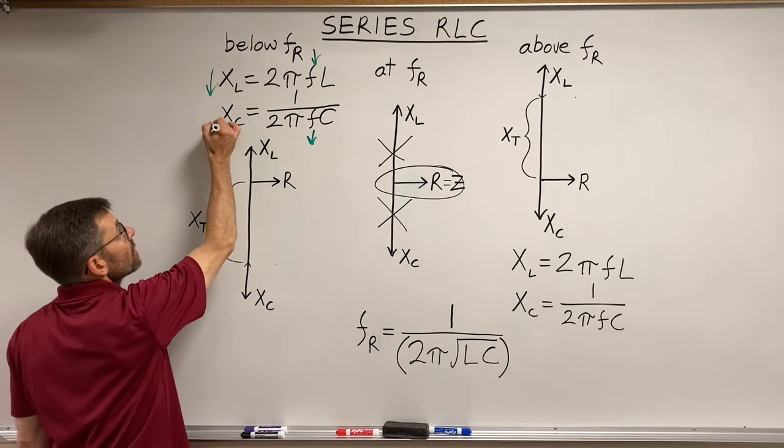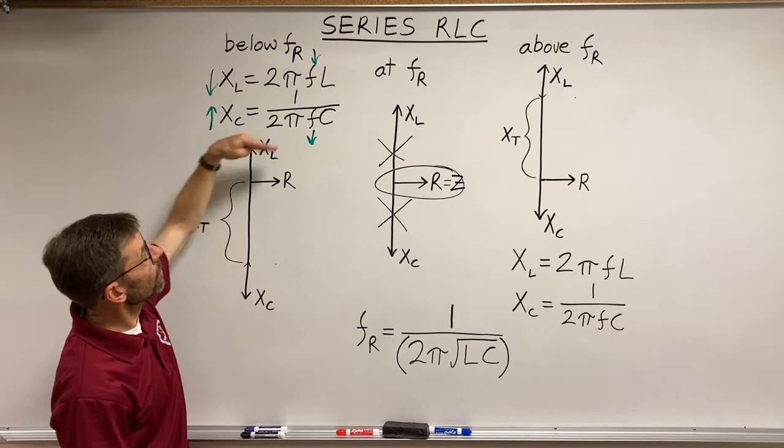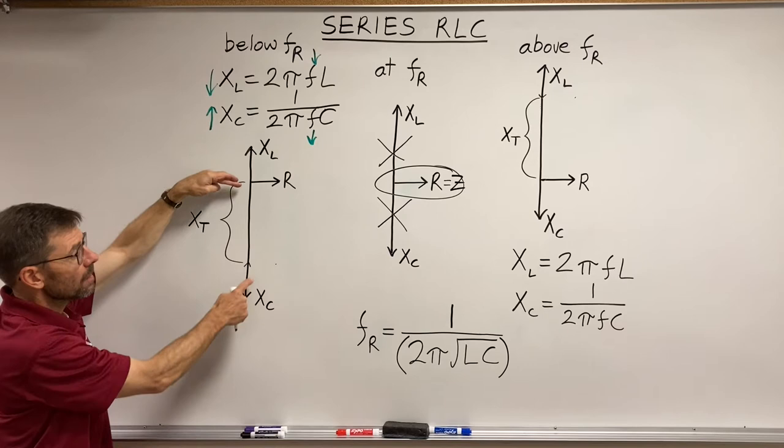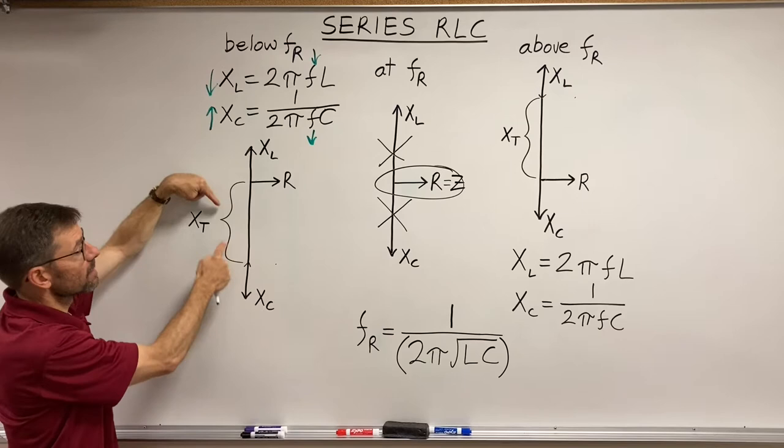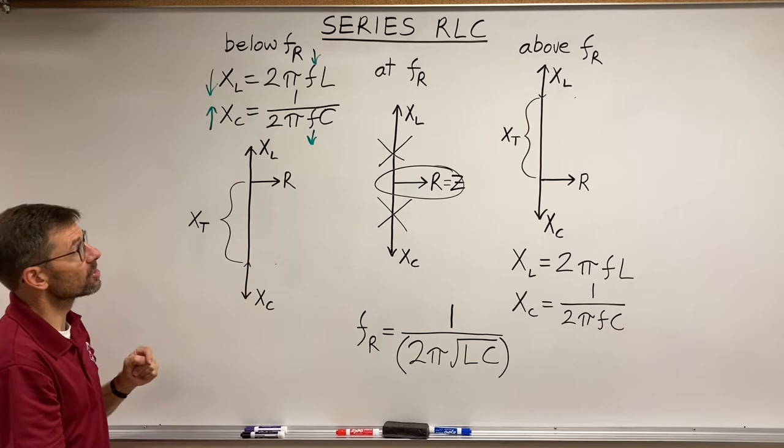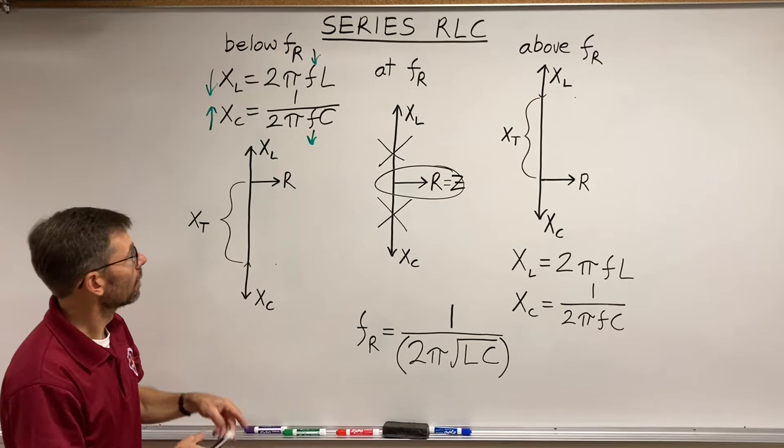So sure enough, when the frequency went down from resonance, the XL got smaller and the XC got larger. What did that do? That left me a net reactance, the difference between these two opposing vectors. And what does that mean for my circuit impedance? Well, my resistance is there, and here's the net reactance, the total reactance.